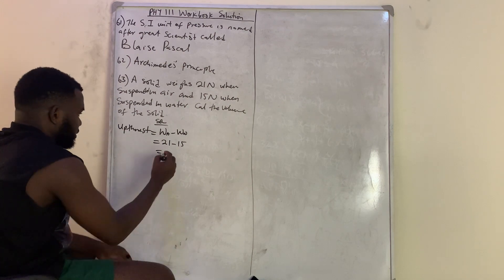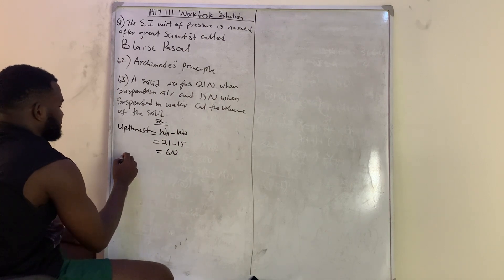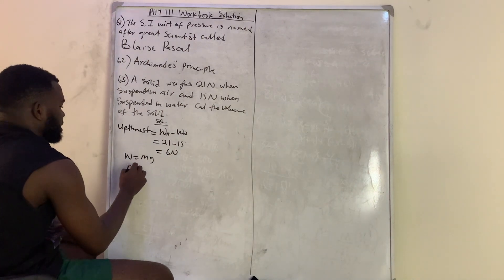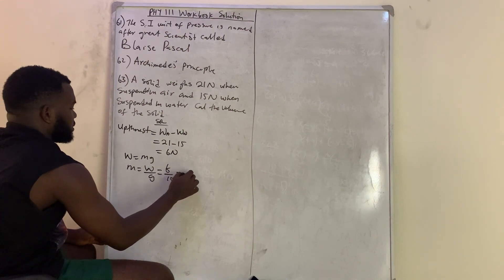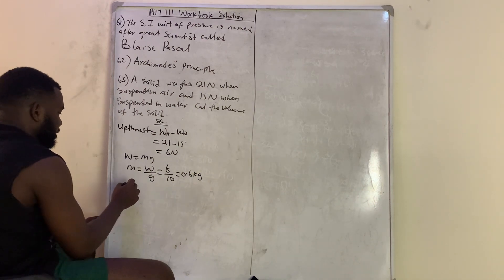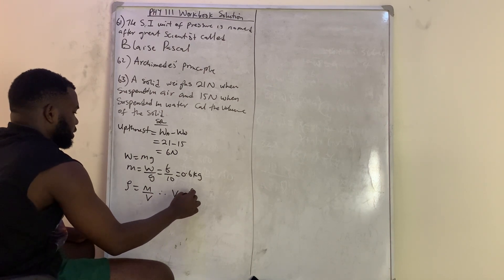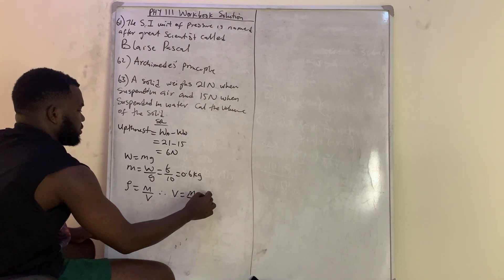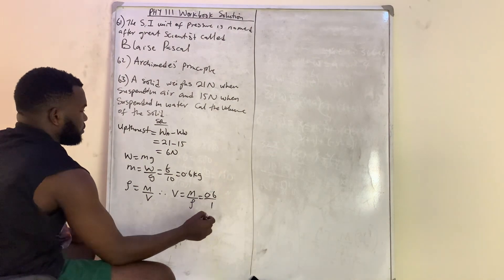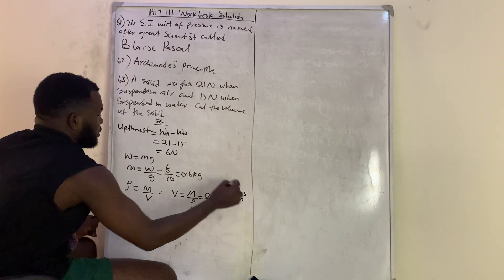Now let's find the mass. Since weight = mg, mass = weight ÷ g = 6 ÷ 10 = 0.6 kg. Since density = mass ÷ volume, the volume = mass ÷ density = 0.6 ÷ 1 (density of water) = 0.6 cubic meters.